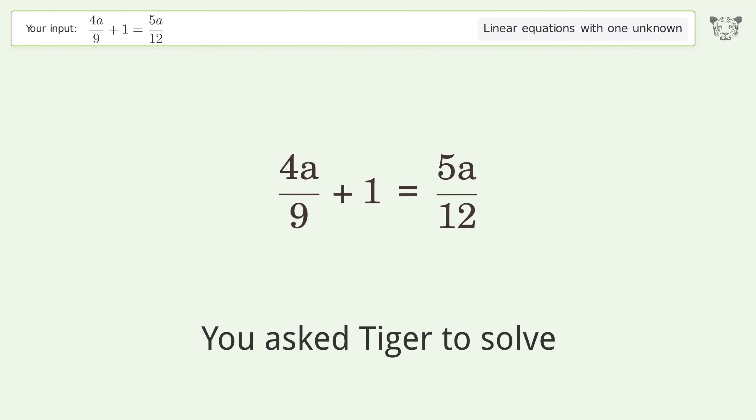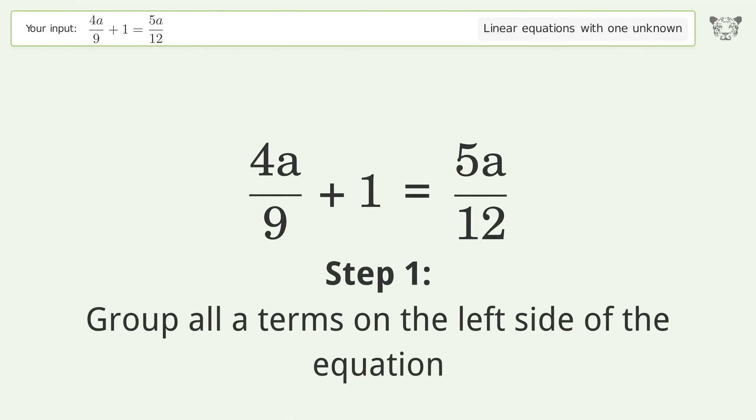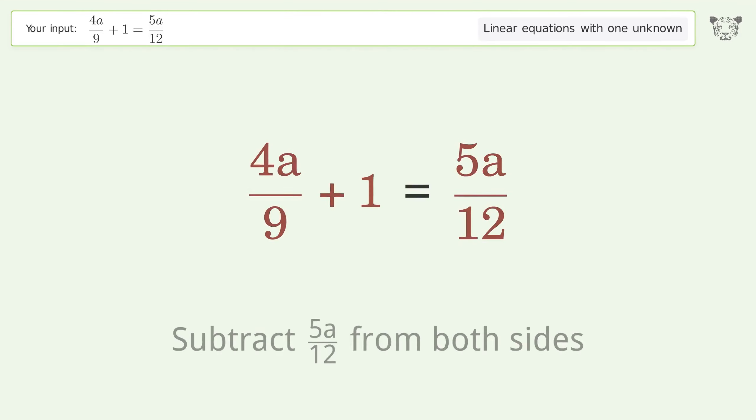You asked Tiger to solve this, which deals with linear equations with one unknown. The final result is a equals negative 36. Let's solve it step by step. Group all a terms on the left side of the equation. Subtract 5a over 12 from both sides.